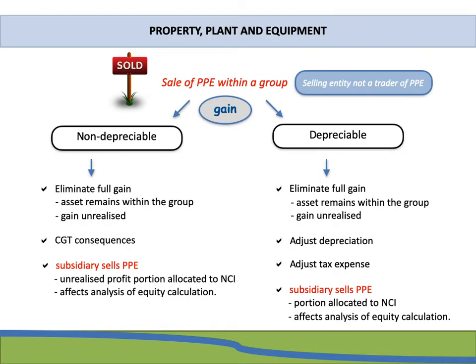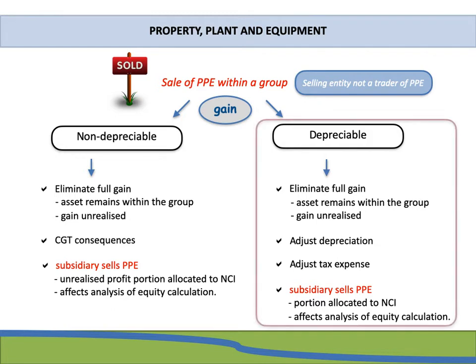In the previous presentation we discussed what happens when you have a sale of property, plant and equipment within a group and that sale results in a gain. We had a look at when this property, plant and equipment is a non-depreciable item, but today we are going to focus on when it is a depreciable item of property, plant and equipment.